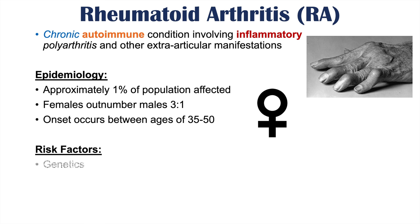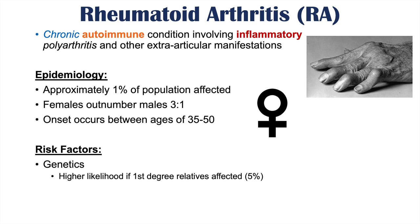There are particular risk factors for getting rheumatoid arthritis, and number one is genetics. There is a higher likelihood of getting rheumatoid arthritis if there is a first-degree relative — your parents, a sibling, or one of your children — who is also affected, giving a 5% chance that you'll be affected as well. Particular genes associated with rheumatoid arthritis include the HLA class 2 or DR genes.